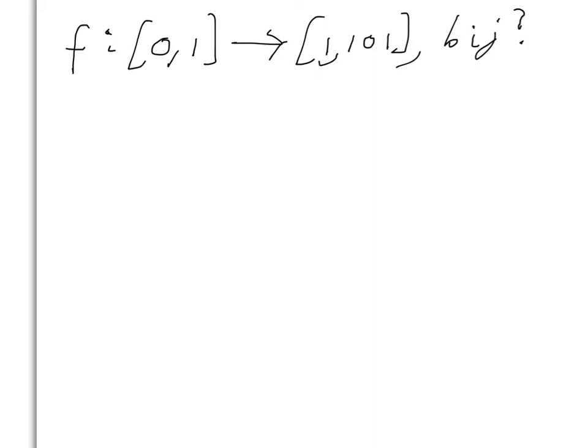So let's draw a graph. If we look along the x-axis, the interval from 0 to 1, and we look along the y-axis, the interval from 1 to 101, then I think it's pretty clear that there's a straight line function that we can use to bijectively map [0,1] to [1,101]. It's pretty clear from the picture that that's 1 to 1 and onto.